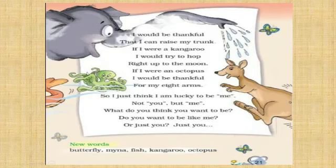Then which creature is this? This one is an octopus. Octopus ke kitne arms hote hain? Eight — one, two, three, four, five, six, seven, and eight. So yeh girl think karti hai ki if I were an octopus, I would have eight arms. At the end, this girl asks a question to the readers: if they are happy and satisfied with what they have in their life — are you happy with what you have?